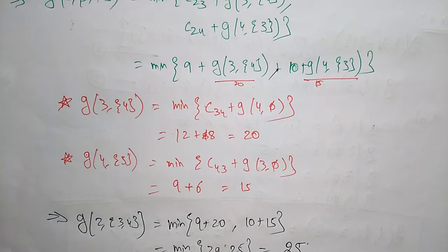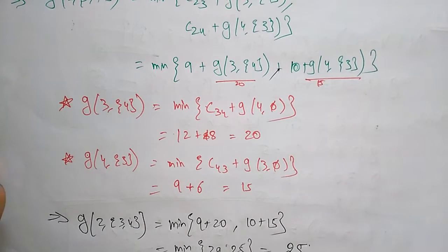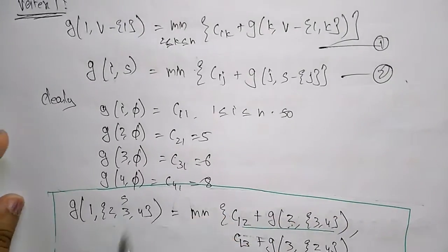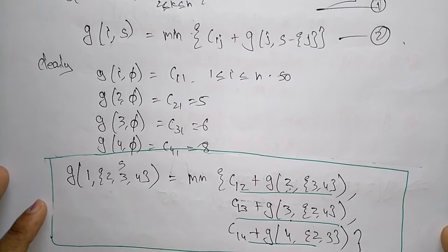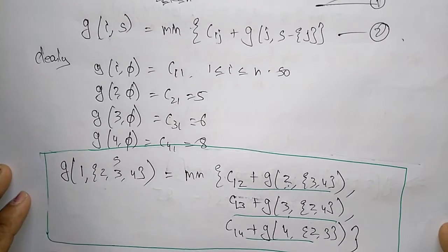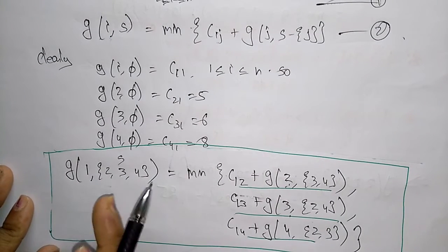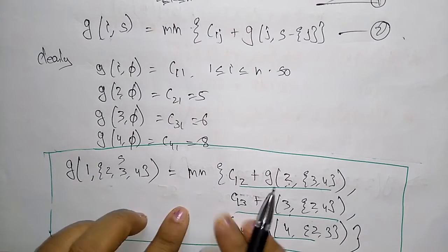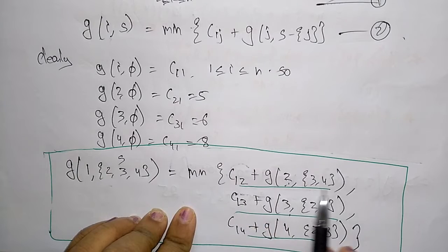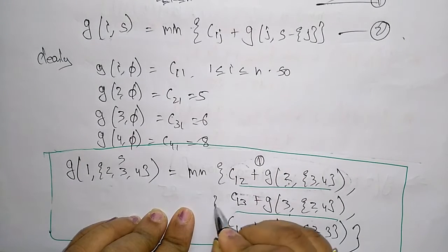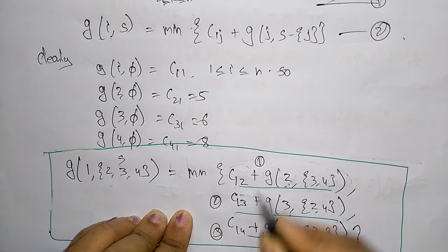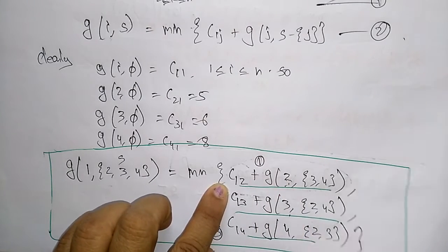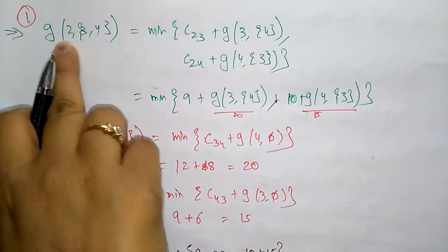Let us continue the Traveling Salesman Problem. In the previous video we wrote the formula for calculating the shortest path — minimum cost starting from vertex 1 and visiting other vertices. We have already calculated part 1, part 2, and part 3, and finally we will substitute all the values. The value we already calculated: g(2, {3,4}) gives us 25.